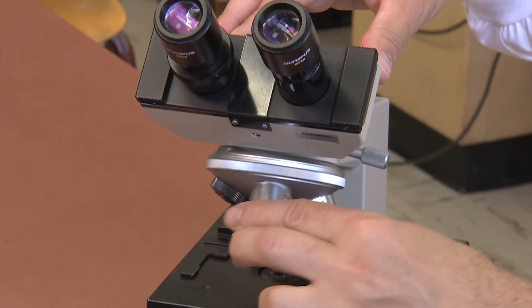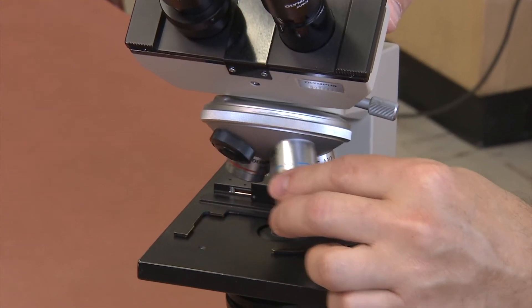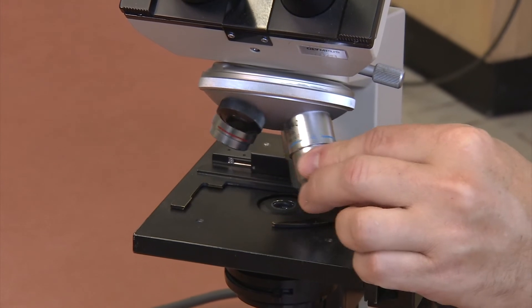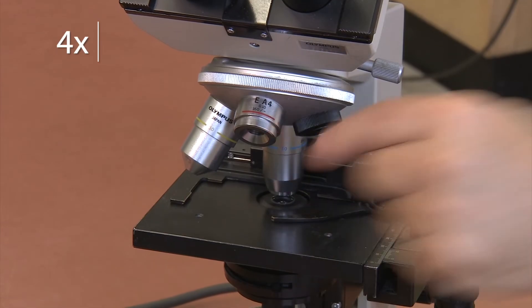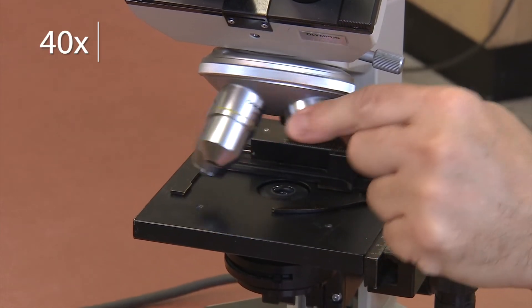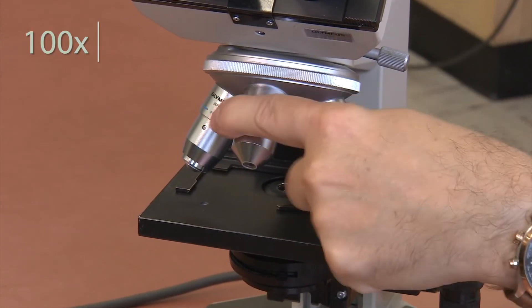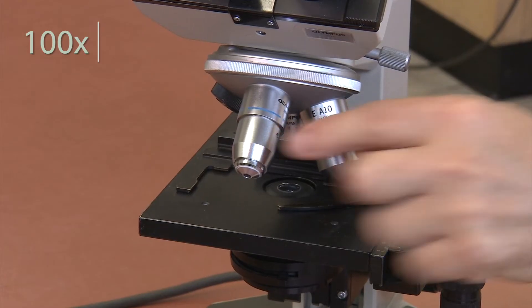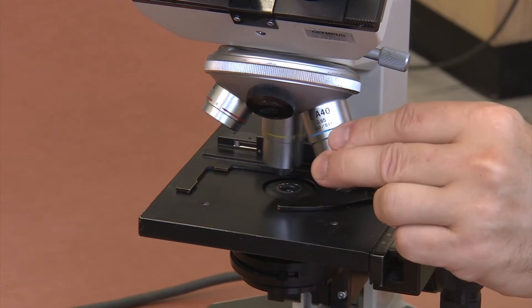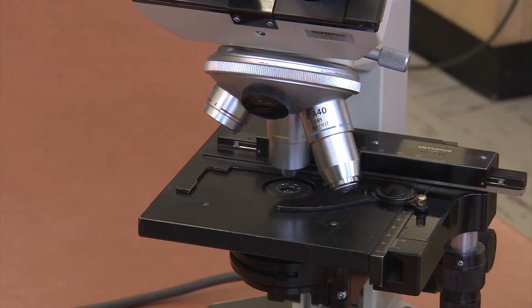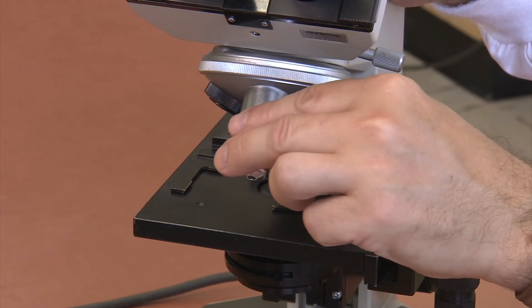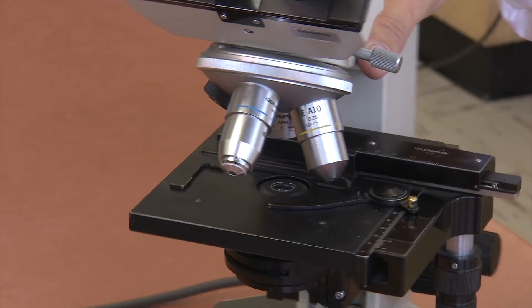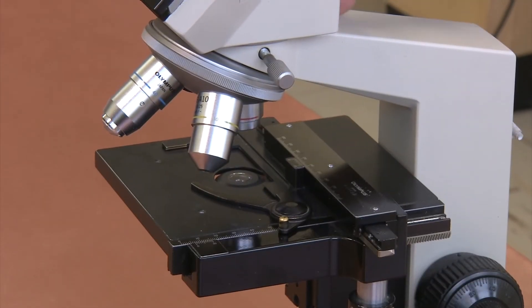Below the binocular tube is the revolving nosepiece and objective lenses. Most compound microscopes have three or four objectives: four times, ten times, forty times, and sometimes a 100 times lens that is only used for oil immersion. Together, the oculars and objective lenses magnify the specimen. Rotating the nosepiece switches between objective lenses so that you can change the magnification.